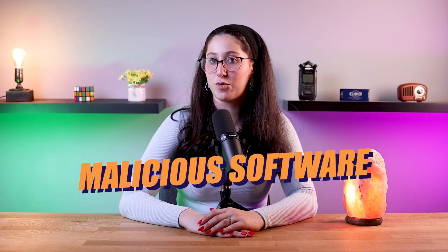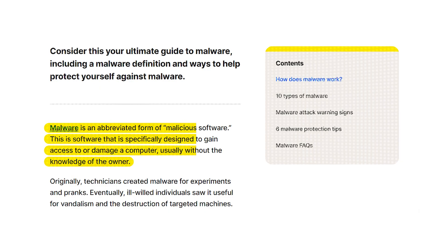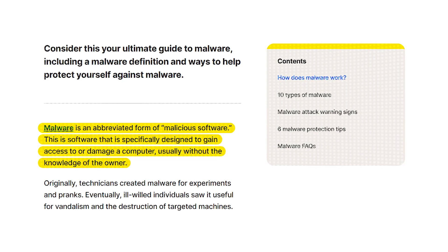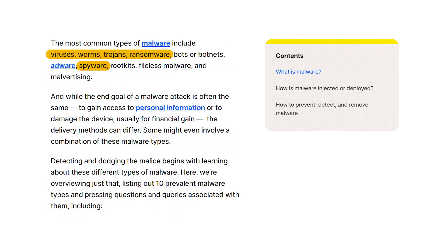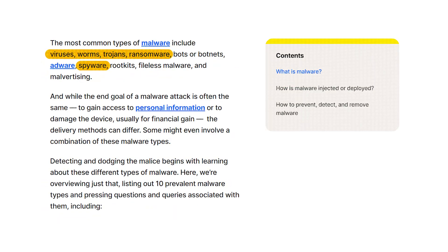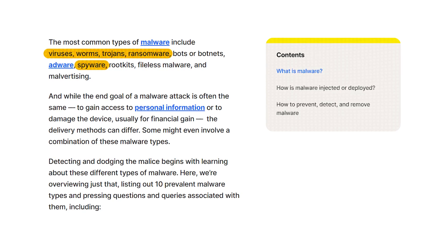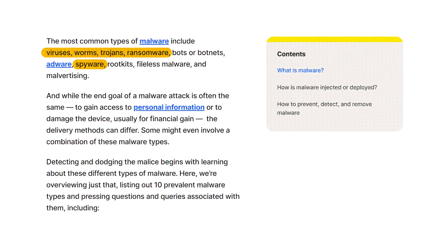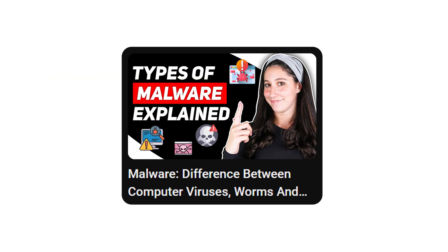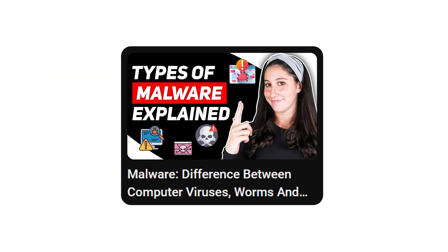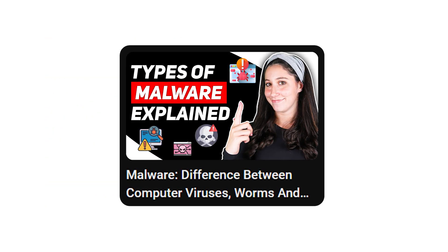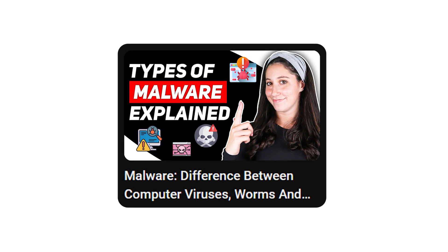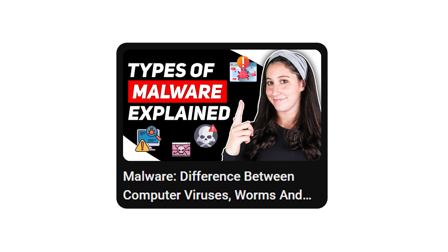Malware, which is short for malicious software, is any program or file that is intentionally harmful to a computer network or server. There are a bunch of different types of malware, including computer viruses, worms, trojans, ransomware, and spyware. If you want to know the differences between these, I've already made a video talking about them, which I'll also leave in the description down below.